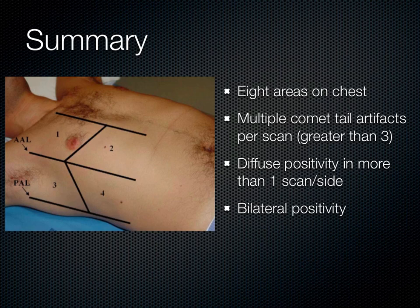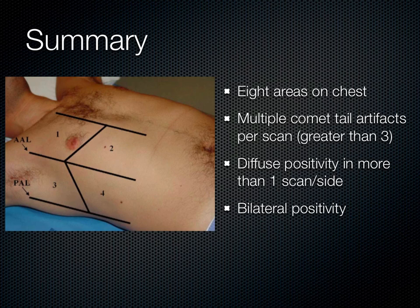To summarize: pulmonary ultrasound is not new — it's just newly appreciated. We're adapting it to evaluate pulmonary edema, pneumothorax, pleural effusions, consolidations, and multiple other etiologies to guide therapies and get the correct treatment to the patient in real time. You should look at all eight areas of the chest because different areas are good for different etiologies and pathologies. Comet tail artifacts can be normal if they are few and don't extend to the edge of the screen, but if there are multiple extending to the edge — some say greater than 3, others say greater than 5 — that is pathologic and representative of extravascular lung water, either cardiogenic or non-cardiogenic. Diffuse bilateral positivity represents pulmonary edema.